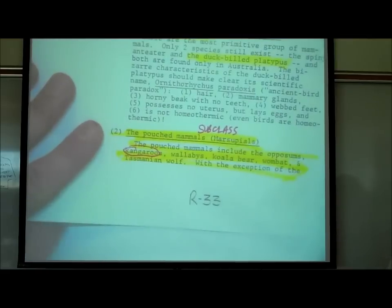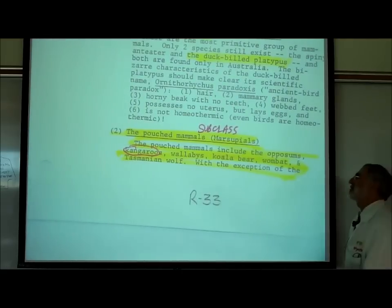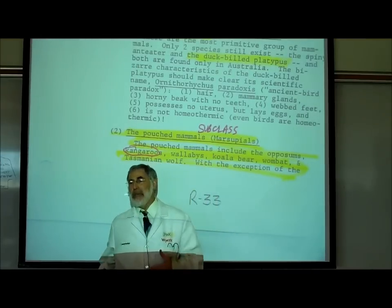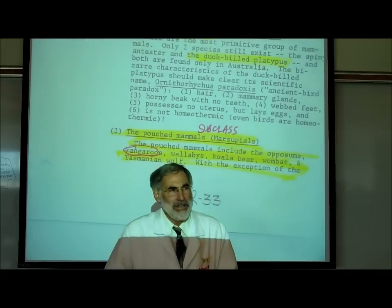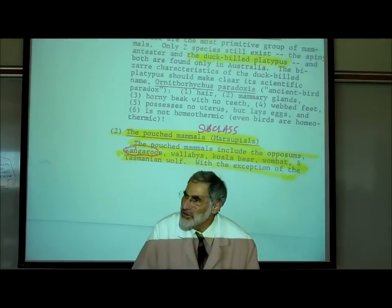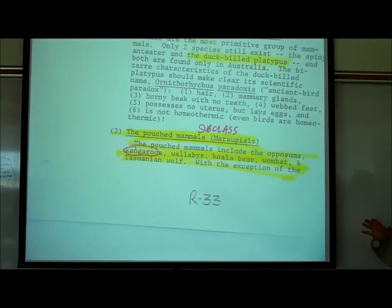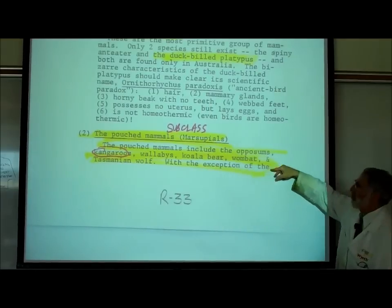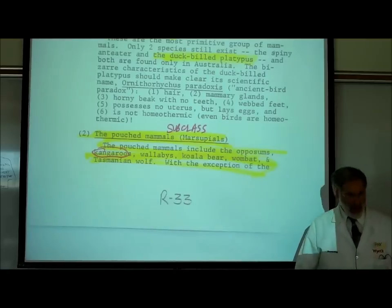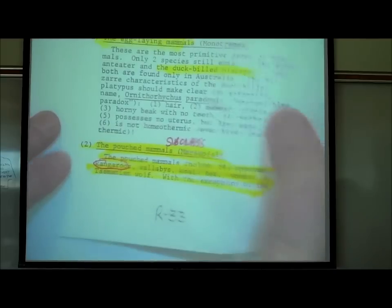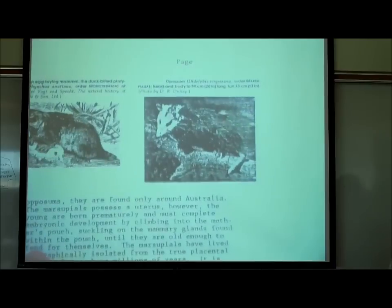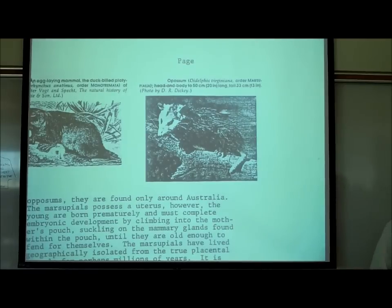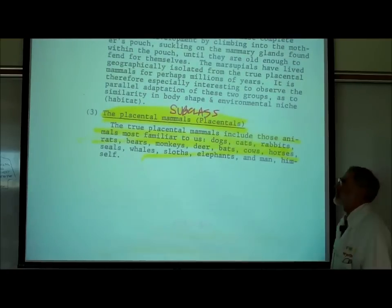Back on R33, the second subclass is pouched mammals or marsupials. The most famous is the kangaroo — the baby kangaroo is in the pouch where the nipples are, nursing. Other marsupials include wallabies, koala bears, wombats, Tasmanian wolves — mostly in Australia. The only marsupial we're familiar with locally is the opossum.